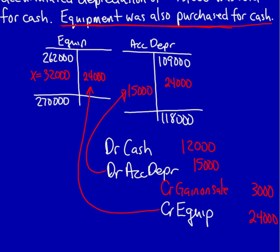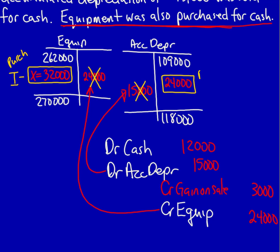Now we categorize items into the correct categories. Starting with the equipment T-account: the purchase amount of $32,000 is an investing activity — we are purchasing equipment and giving away cash. The historical opening and closing balances are ignored. Depreciation expense of $24,000 is needed because it appears on the income statement as a negative; however, it is a non-cash item, so we need to remove it by placing a positive number in operating activities.